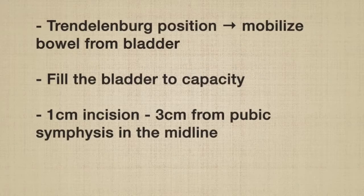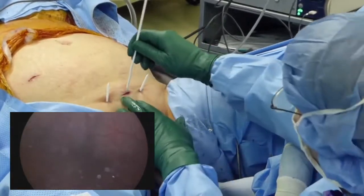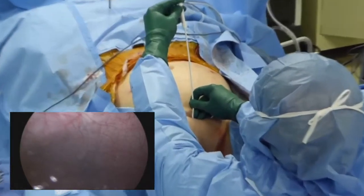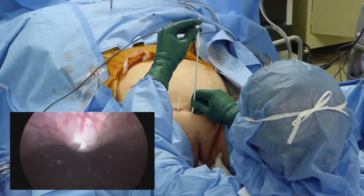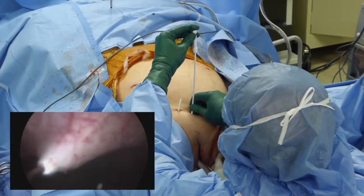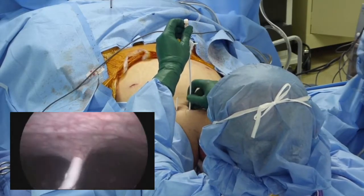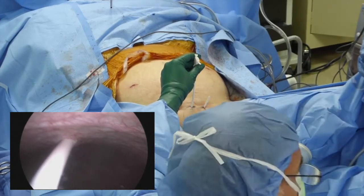MAC-Lock insertion: With the patient in Trendelenburg position and the bladder filled to capacity, make a 1 cm midline incision 3 cm from the pubic symphysis. Insert the cystoscope and the MAC-Lock SPC, and aim for the air bubble to enter through the dome. Maintain steady and controlled pressure to avoid pushing the tip through the posterior bladder. Advance the SPC until all 5 fenestrations are inside the bladder, then remove the introducer stylet.